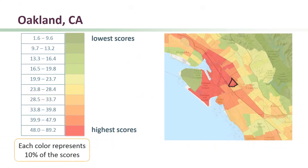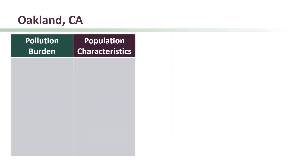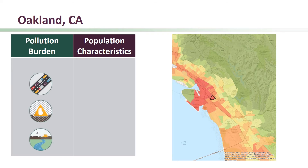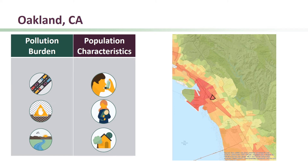For example, here is a census tract in Oakland within the San Francisco Bay Area. This census tract's CalEnviroScreen score places it in the top ten percent of scores across the state. The pollution burden score here is high, but not as high compared to some parts of the state. But some indicators do score highly, such as traffic density, cleanup sites, and impaired water bodies.